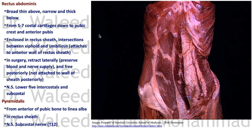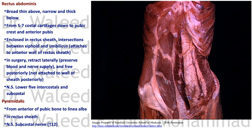The rectus abdominis muscle is quite different — ribbon-like, extending from the thoracic cage to the pubic bone, broad above and narrow and thick below. Above it takes origin from costal cartilages 5–7; below it inserts into the pubic crest and front of the pubic bone. It is enclosed in the rectus sheath and has tendinous intersections from the level of the umbilicus up to the xiphoid, which fuse with the anterior wall of the rectus sheath.